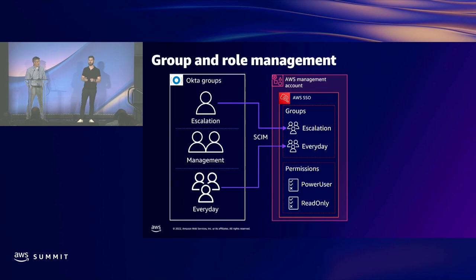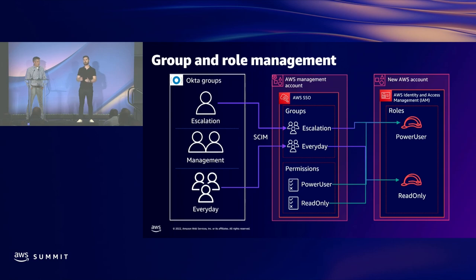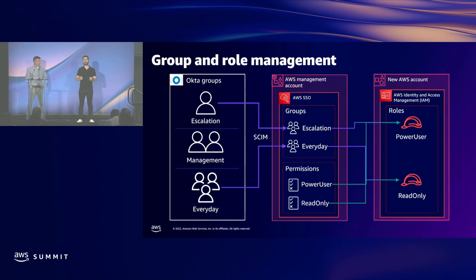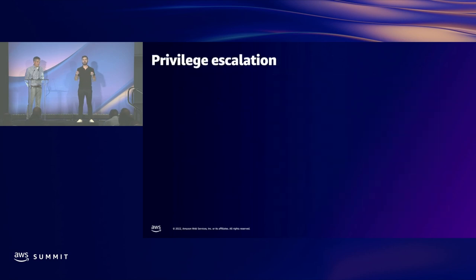With the tight integration between Okta and AWS SSO, these groups get synced immediately via SCIM. Once available in AWS SSO we can assign them to permission sets in a given account. We have a handful of well-defined permission sets in our GitOps repo — examples include read-only and power user. When a new account is created, we create account mappings that attach these AWS SSO groups to permission sets. Our everyday group gets read-only permissions — log into the console, view their workload, but not view sensitive data or modify resources.